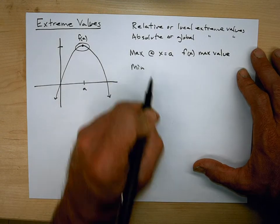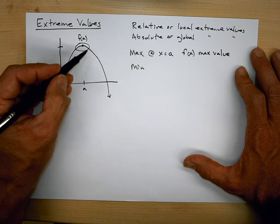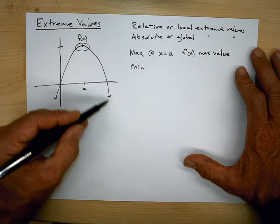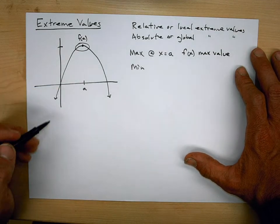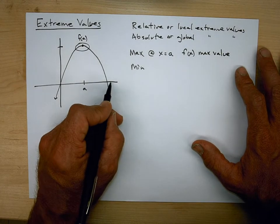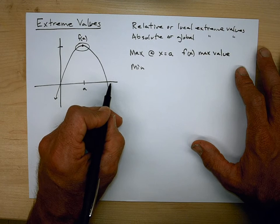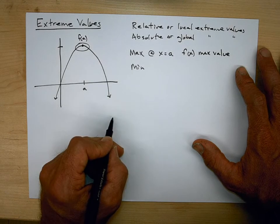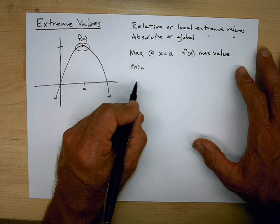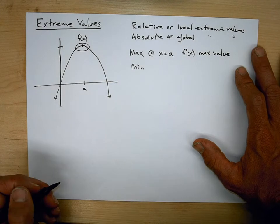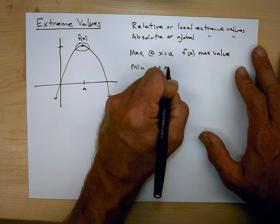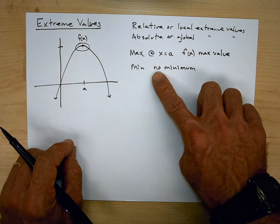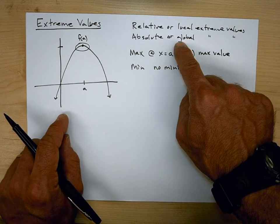What about a minimum? Does this have a minimum? Well, it actually doesn't, because no matter what — these sides go down and just keep decreasing, going to negative infinity. So no matter what point you might say is a minimum, I can find a point that would give me a smaller value than that. I could go out a little bit farther because this is a decreasing function and find an even smaller value. So in this case there is no minimum. That's one of the first things to recognize: it is possible for there to be no relative or global max or min.